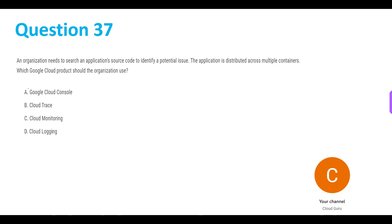We'll start by eliminating the options. Let's start with A, which is Google Cloud Console. Google Cloud Console just provides a graphical user interface, which helps us manage our Google Cloud projects and resources. But here in the question, we need to search an application's source code to identify a potential issue. That won't be possible through Google Cloud Console. That is why A is not the answer.